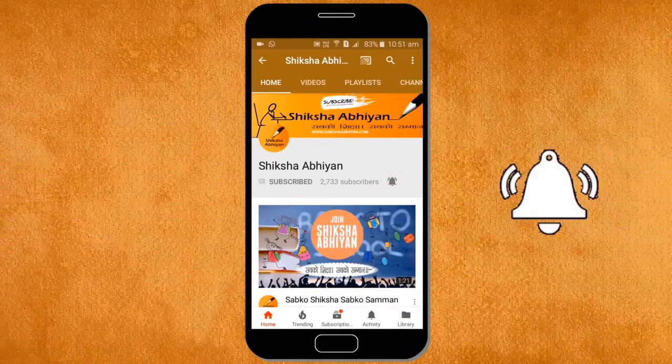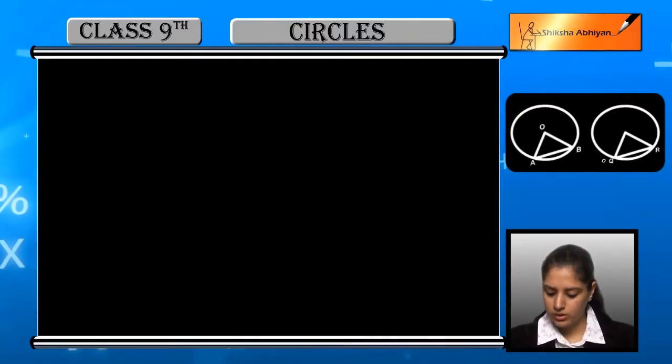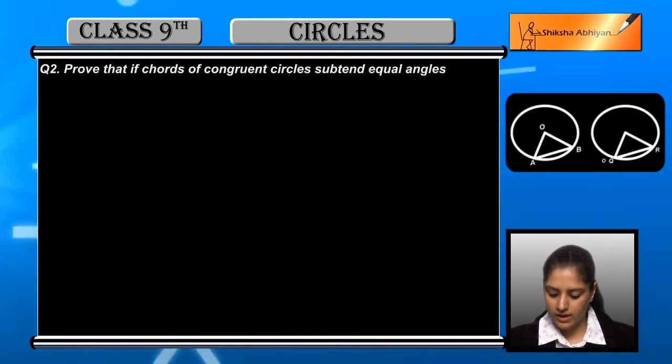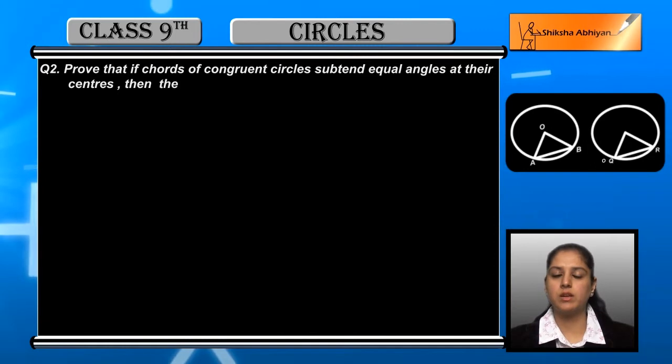Question number two: Prove that if chords of congruent circles subtend equal angles at the centers, then the chords are equal.